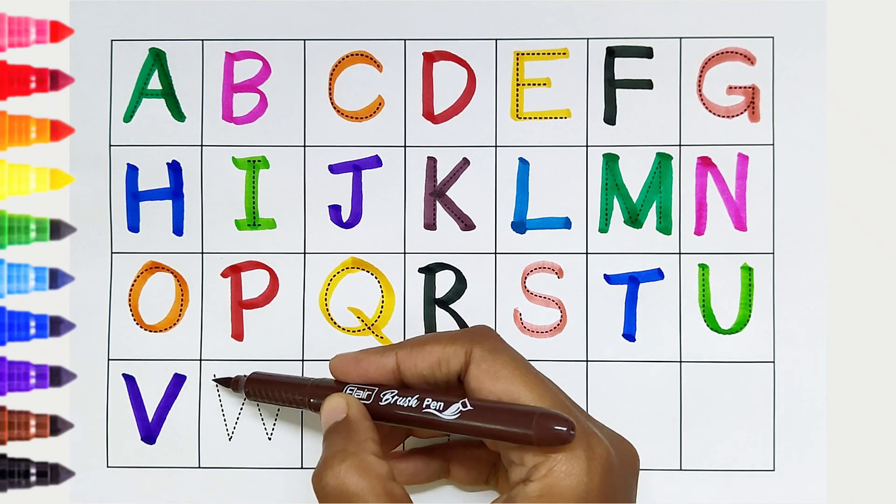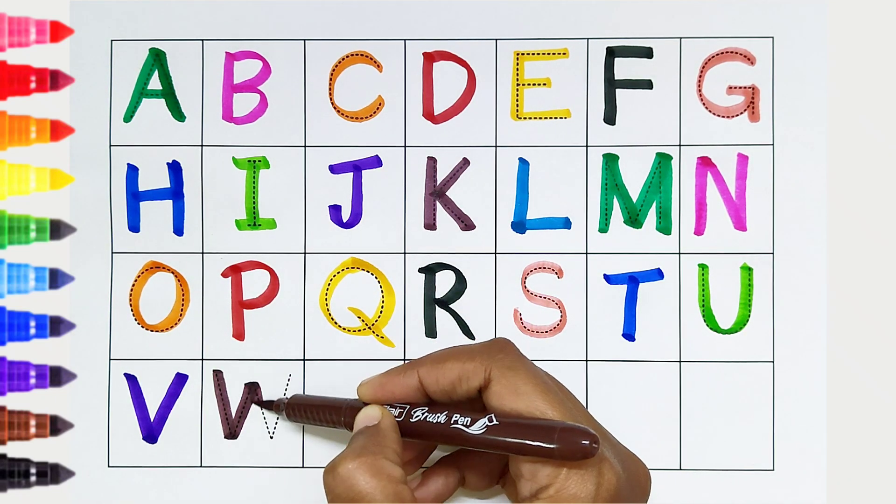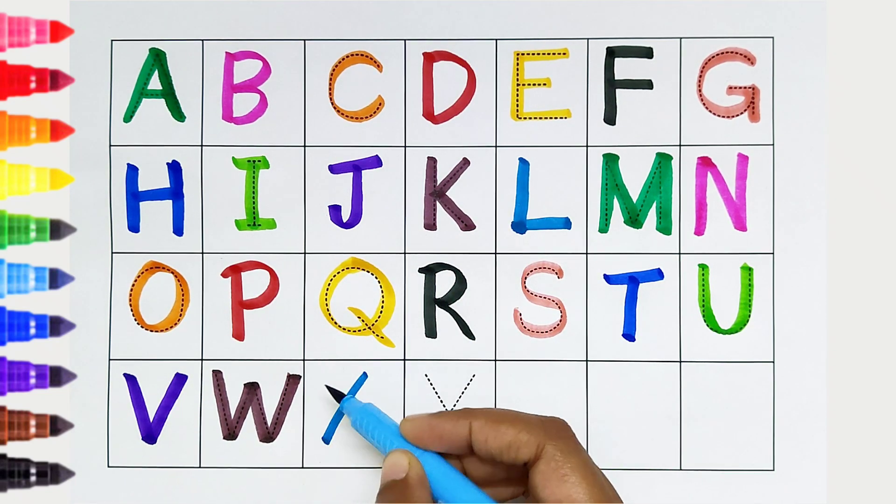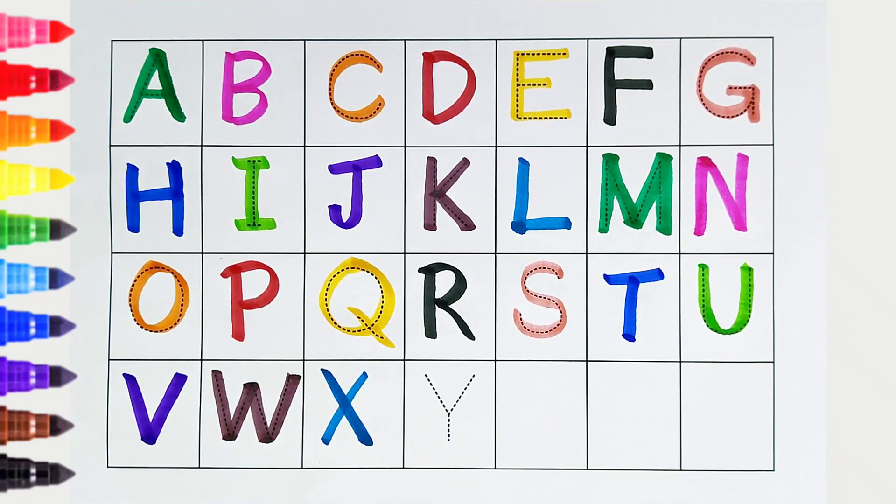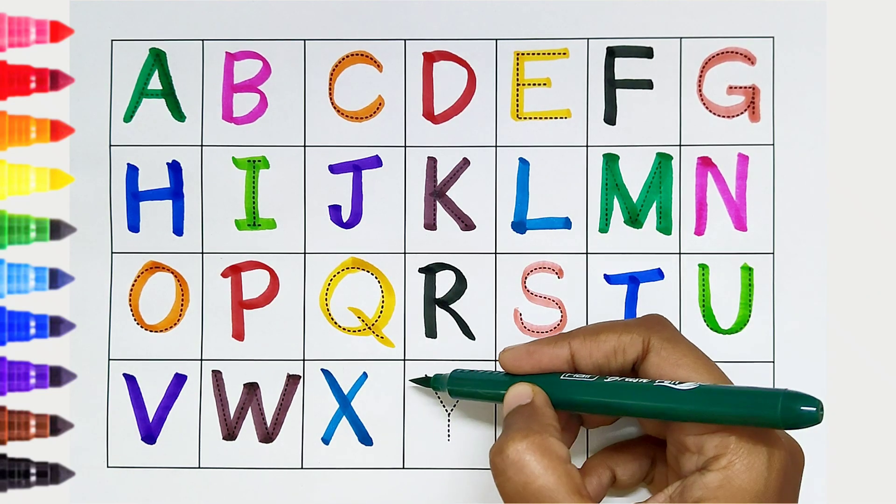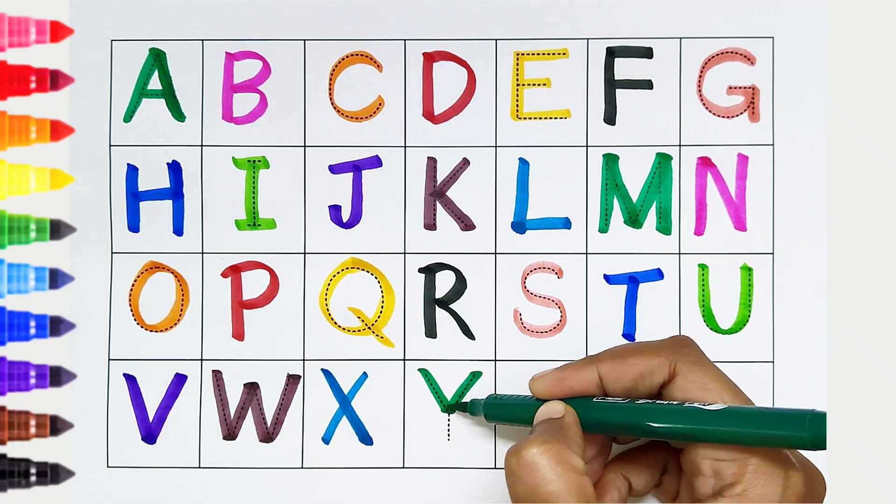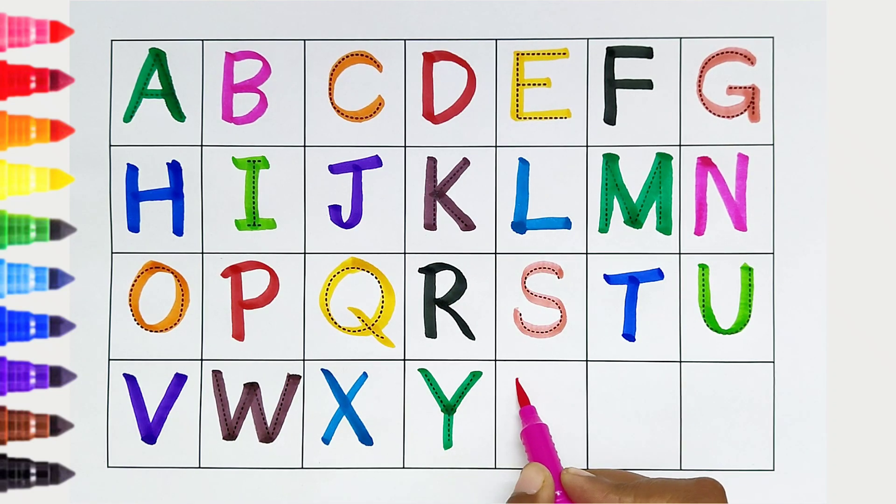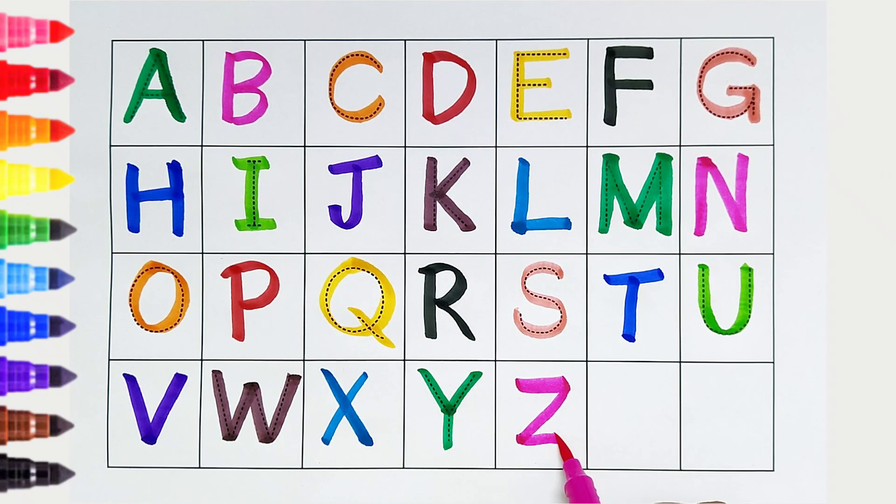W. Brown color, W is for watermelon. X. Light blue color, X is for xylophone. Y. Dark green color, Y is for yak. Z. Dark pink color, Z is for zebra.